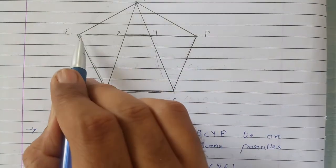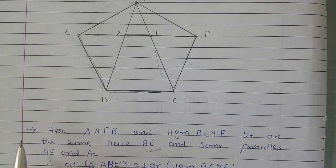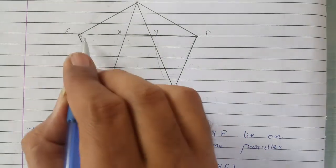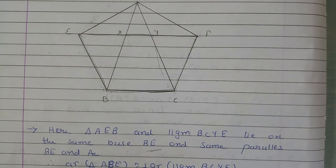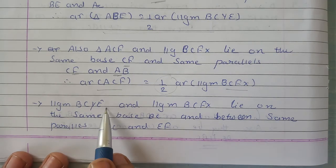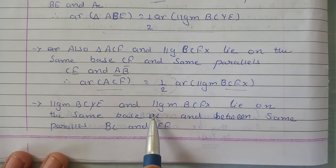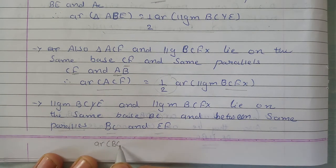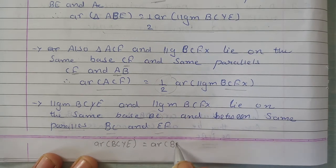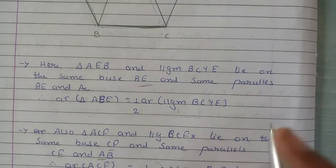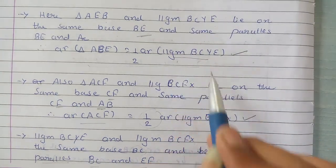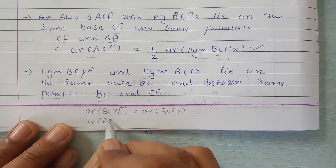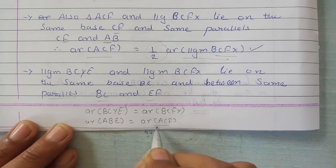Ab, parallelogram BCYE aur parallelogram BCFX — donon ka base BC jo hai wo same hai, aur donon BC aur EF parallel lines ke beech mein hain. Matlab donon parallelogram ka area hona chahiye equal. So that's what we have written over here — parallelogram BCYE and parallelogram BCFX, same base BC ke upar hain aur BC aur EF parallel line ke beech mein hain, matlab area(BCYE) = area(BCFX). Matlab ke yeh equation aur yeh equation, donon mein right hand side equal honge, toh left hand side bhi equal honge. So we can write: area of triangle ABE is equal to area of triangle ACF. Got it.